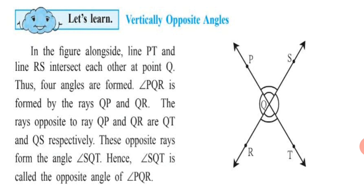Angle PQR is formed by which two rays? Ray QP and Ray QR. The ray opposite to Ray QP and QR are QT and QS respectively. These opposite rays form angle SQT. Hence, angle SQT is called the opposite angle of angle PQR.